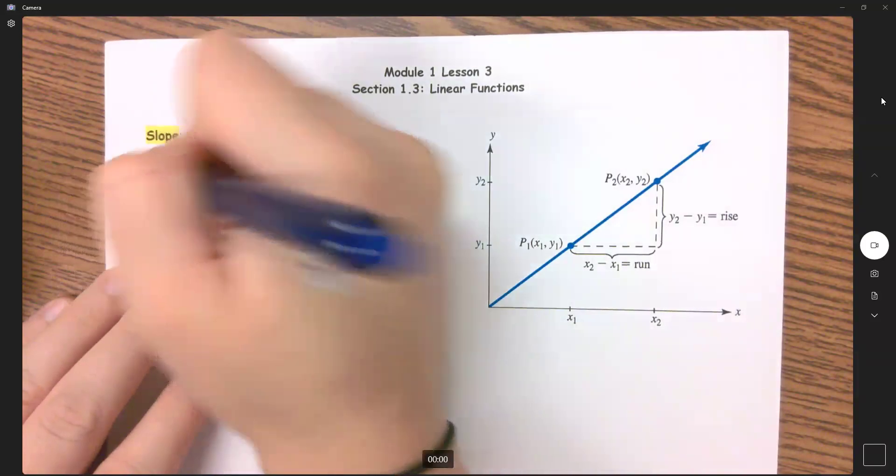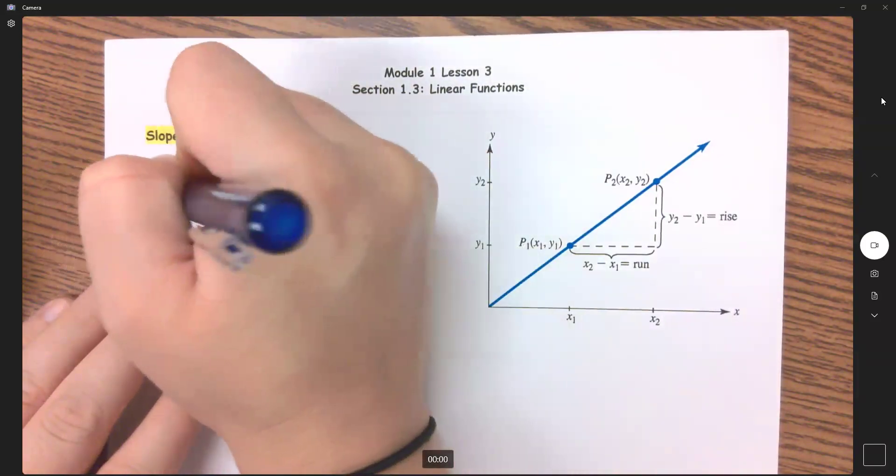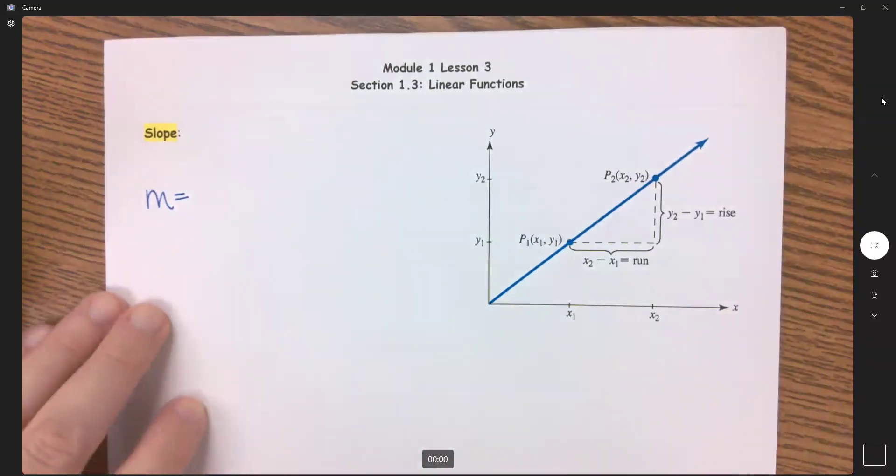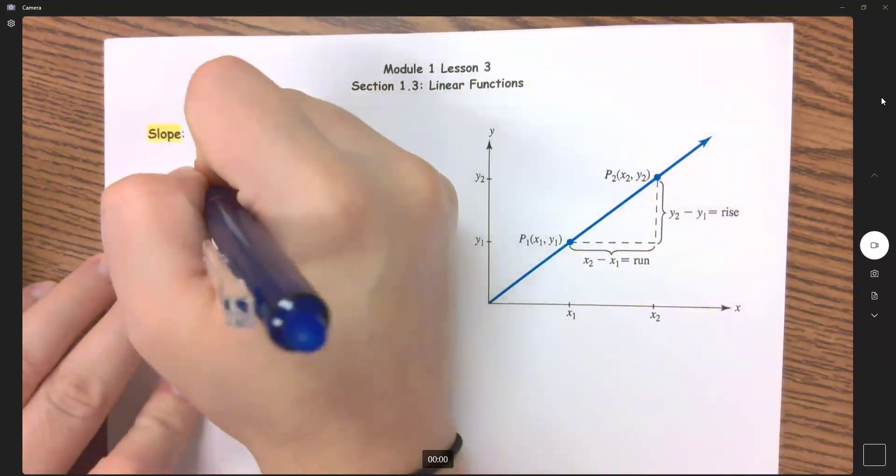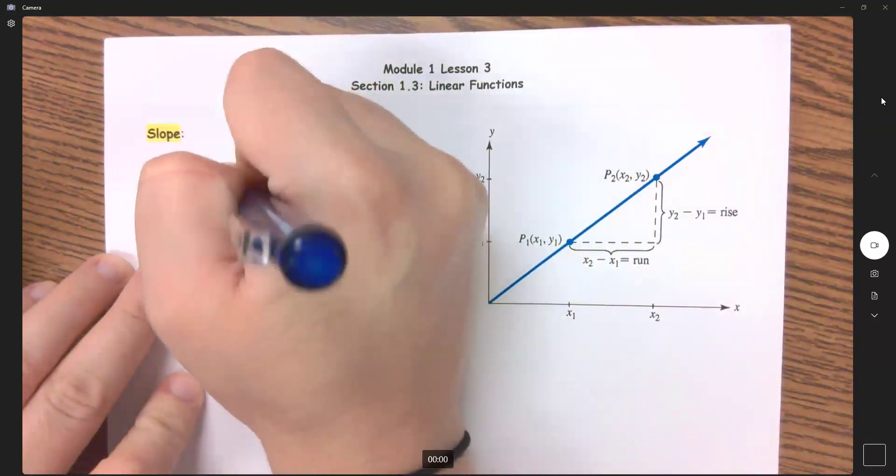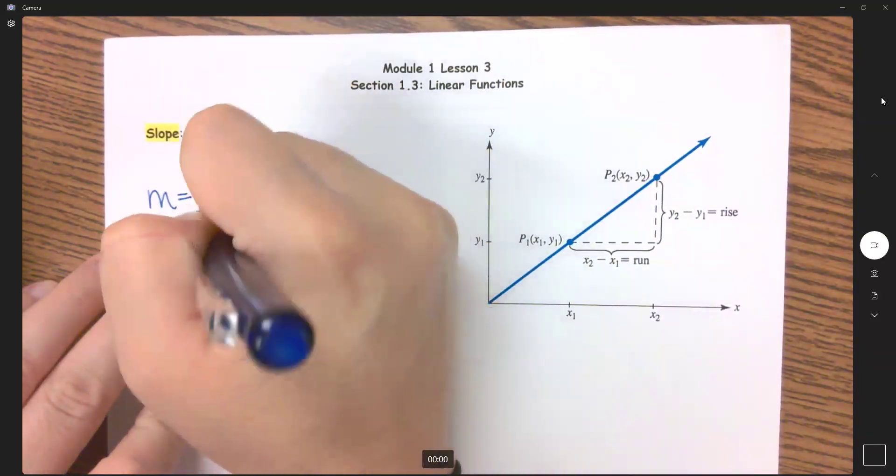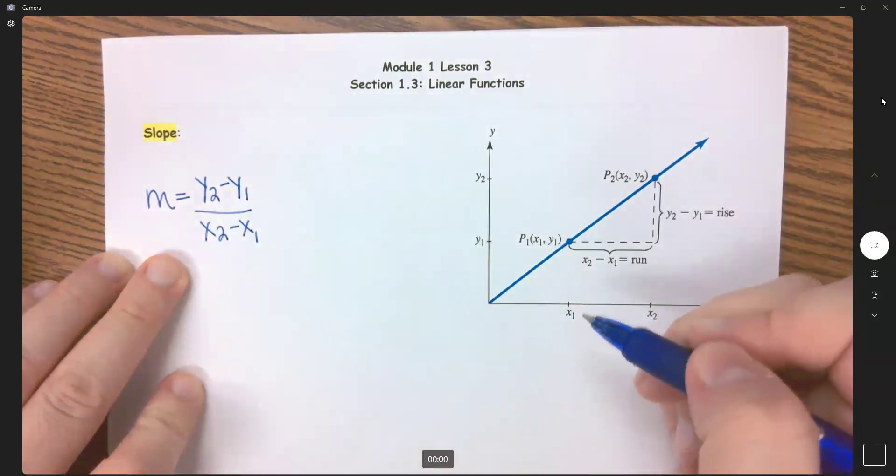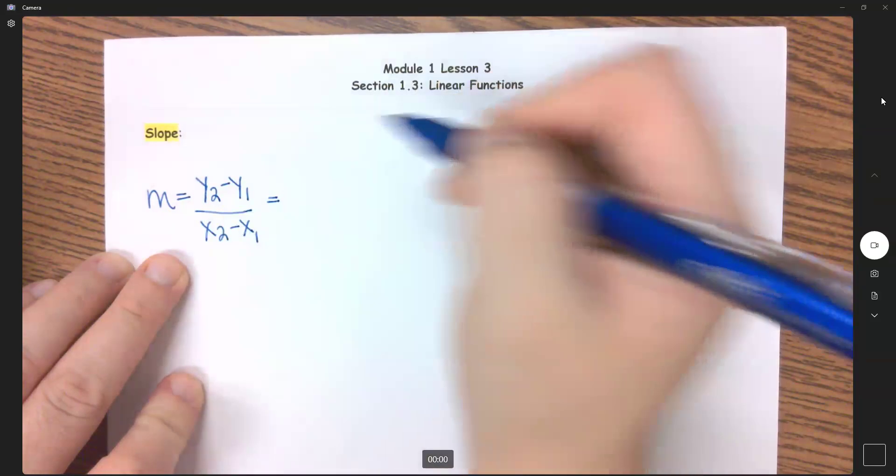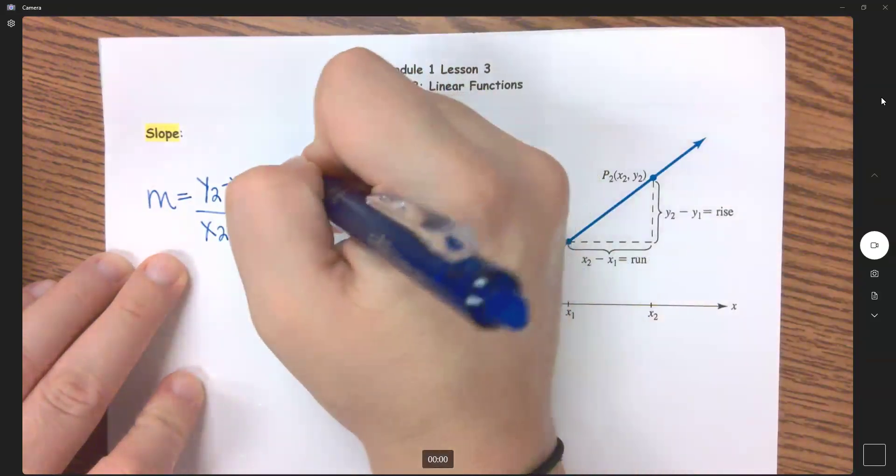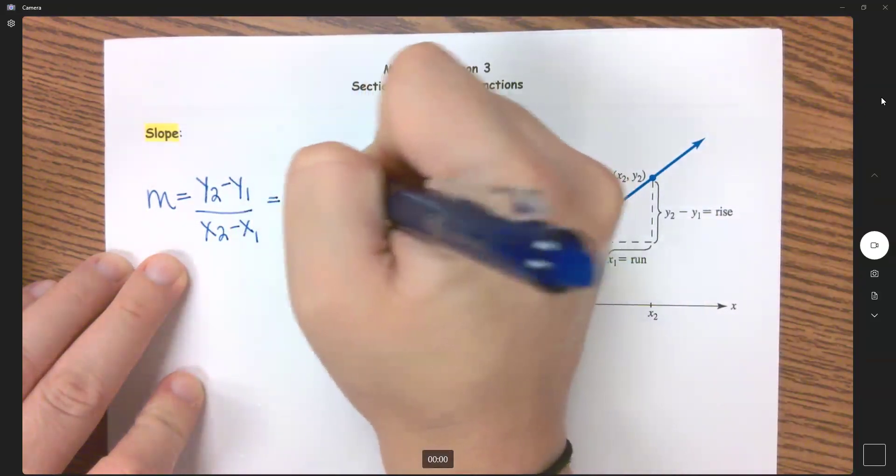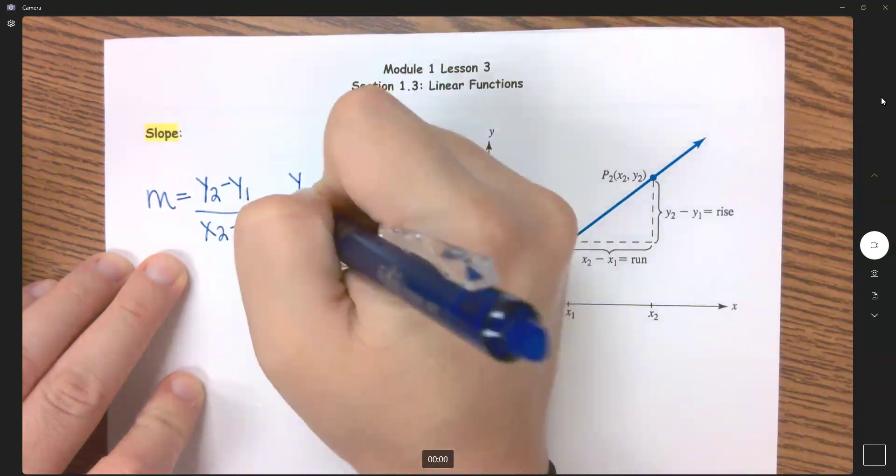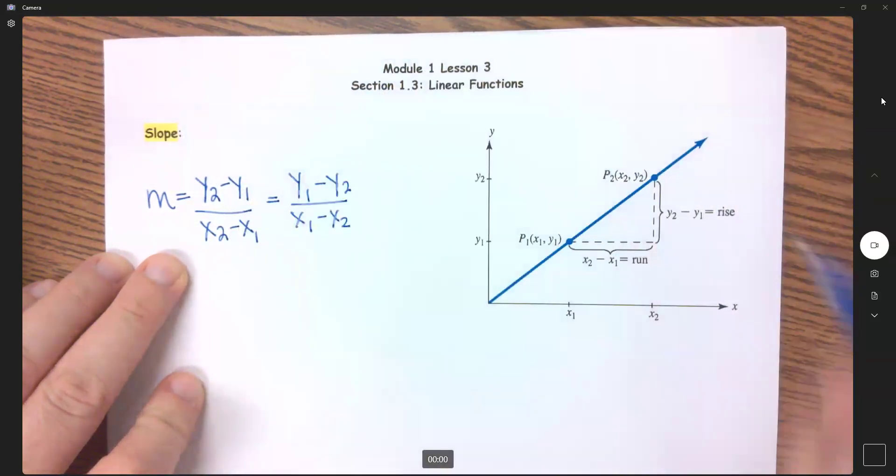The first one is when I'm given two points. So I'm going to have slope equals, which slope is my M, and we can do y2 minus y1 over x2 minus x1. Or you can flip your 1's and your 2's, so we can do y1 minus y2 all over x1 minus x2.